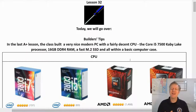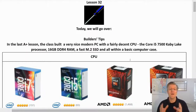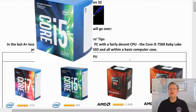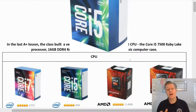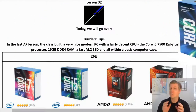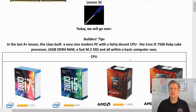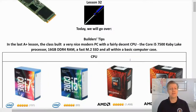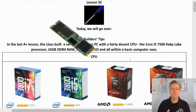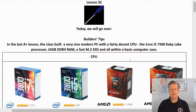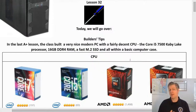In the last A-plus lesson, the class built a very nice modern PC with a fairly decent CPU, the Core i5-7500 Kaby Lake processor, 16 gigs of DDR4 memory, a fast M.2 SSD, and all within a basic computer case.